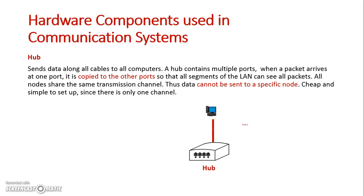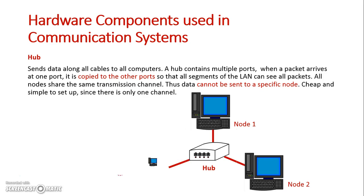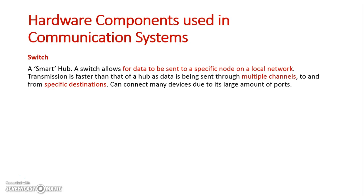A basic hub setup has the hub in the center with three nodes directly connected to it. When node 1 sends data, both nodes 2 and 3 will receive the same data. Next we have a switch, and a switch can send specific data to a specific node. Switches traditionally have more ports and can send data down multiple channels.